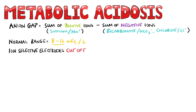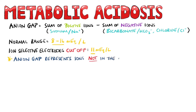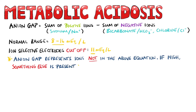According to the latest classification, using ion-selective electrodes, an anion gap is considered high when it is above 11 mEq per litre. Remember, the anion gap shows you the ions that are not accounted for in the formula. So if the anion gap is high, it shows you that there is something else other than the expected ions, like phosphates, calcium and magnesium, present in the blood.